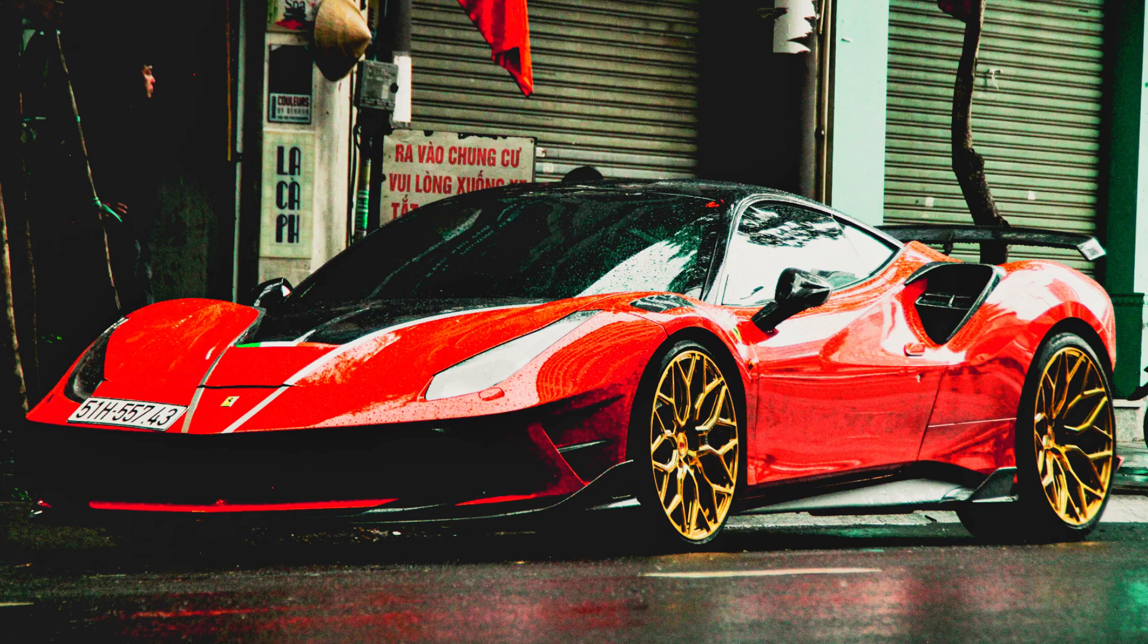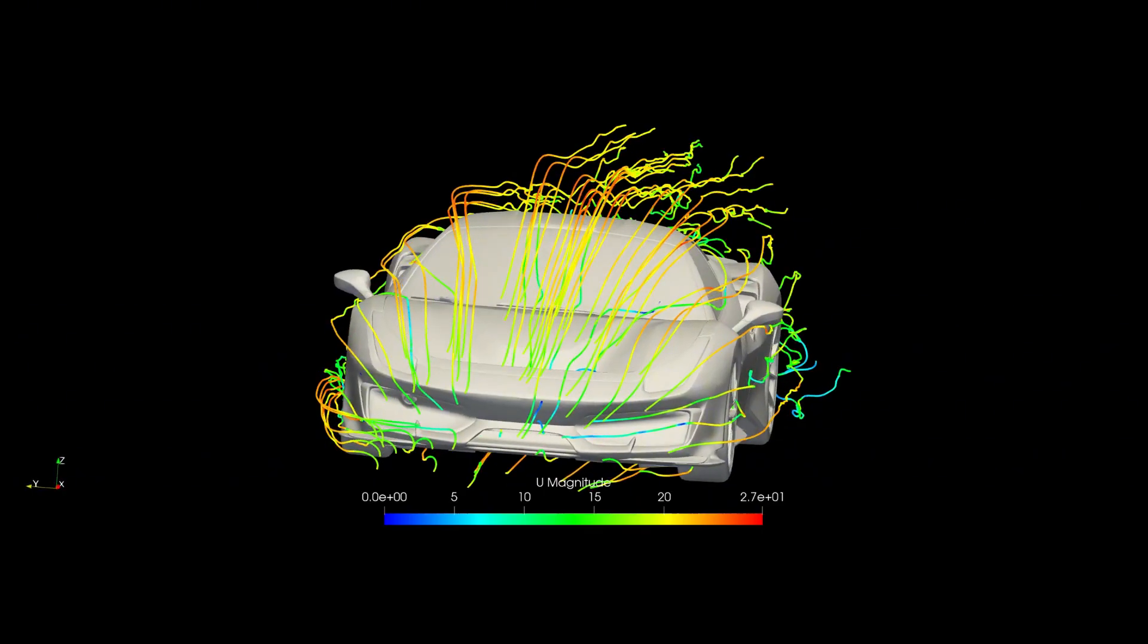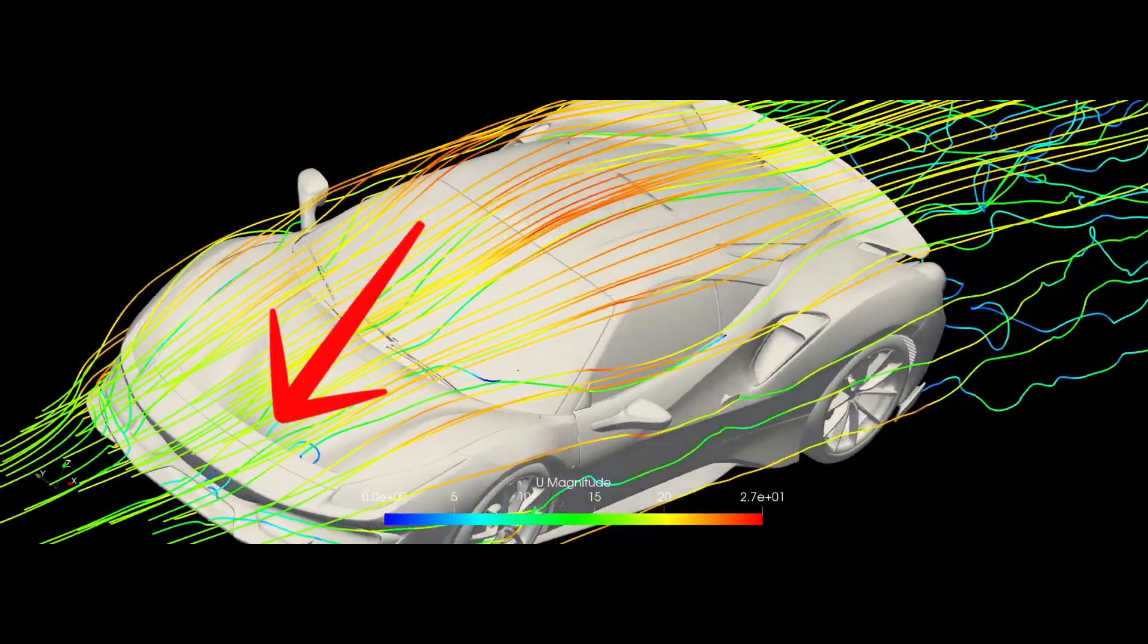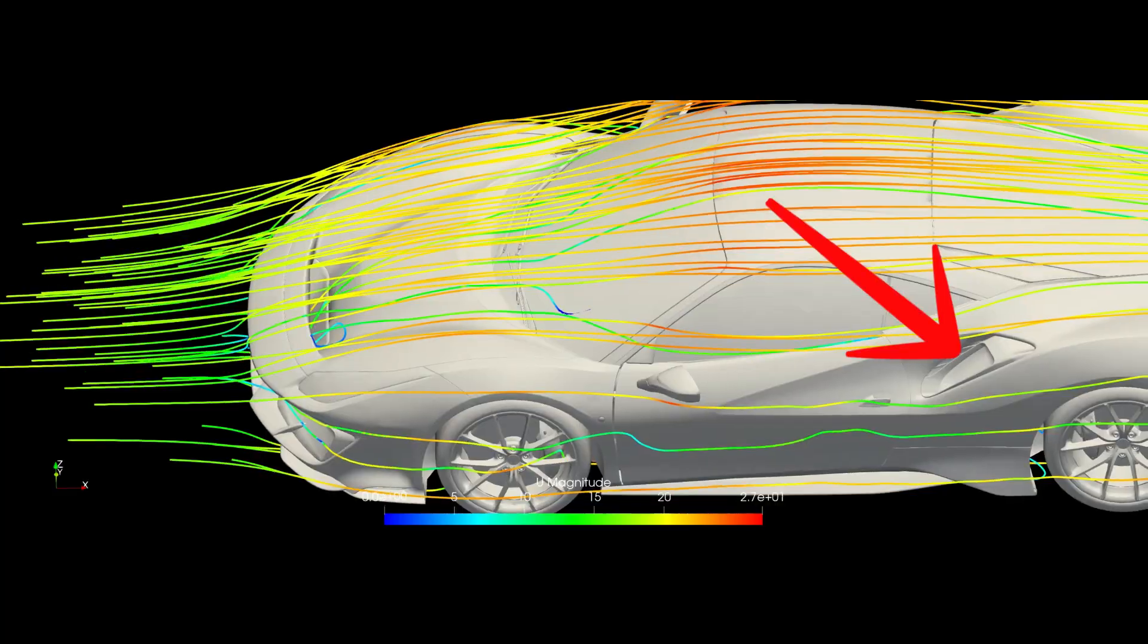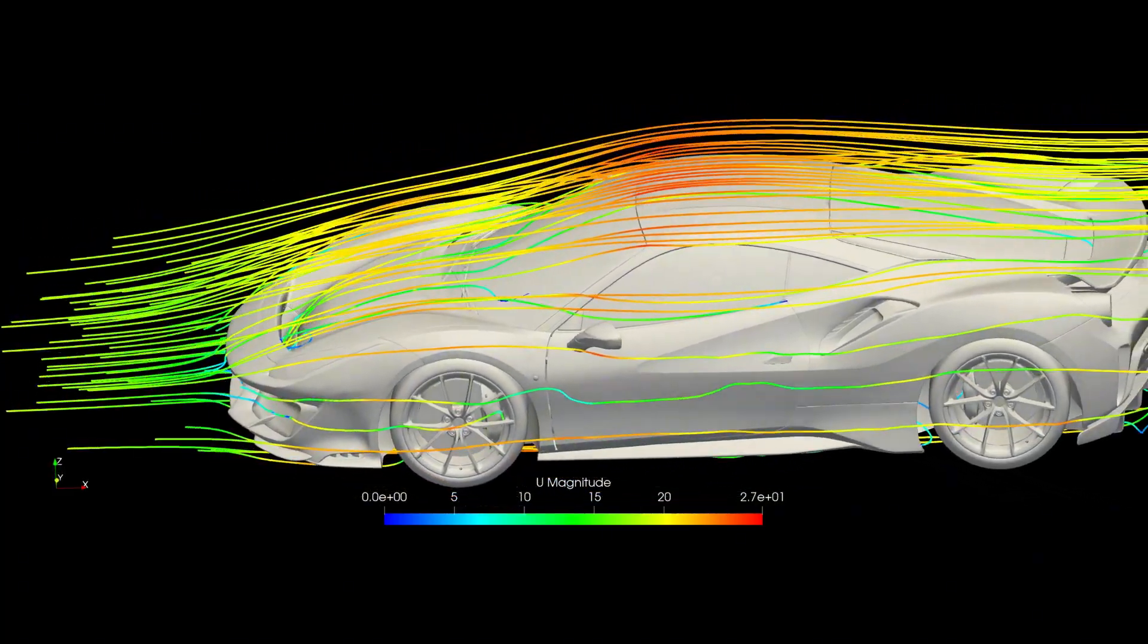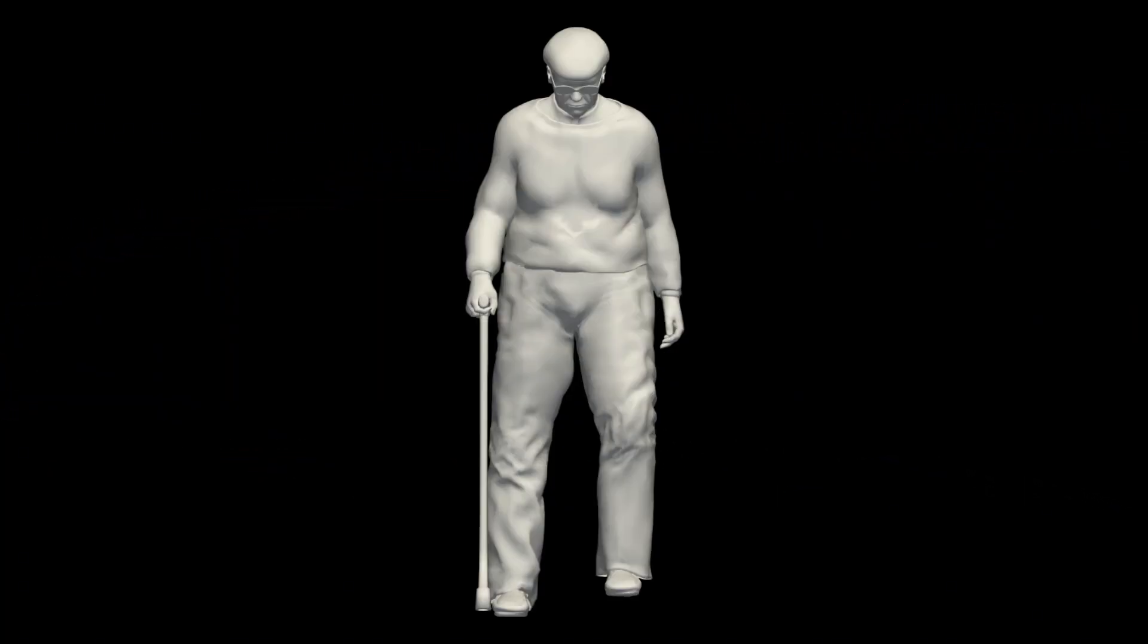The Ferrari 488 Pista is incredibly advanced. Among other things, it has active aerodynamics, a channel at the front to produce downforce and guide the flow better over the hood, and side vents that remove low-energy flow. But is it more aerodynamic than Mother Nature's creation, the old man?